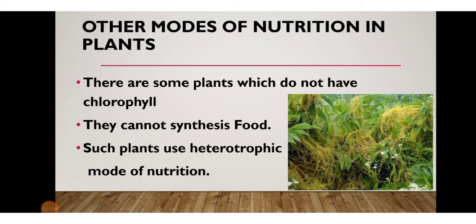Now let's look at other modes of nutrition in plants. Some plants do not have chlorophyll and cannot synthesize food — such plants are heterotrophic. They use heterotrophic modes of nutrition. How do they survive and find nutrition? Such plants depend on other plants or other things, similar to how humans and animals do.